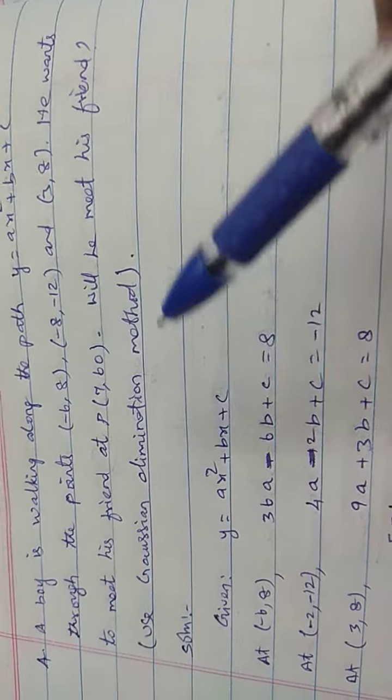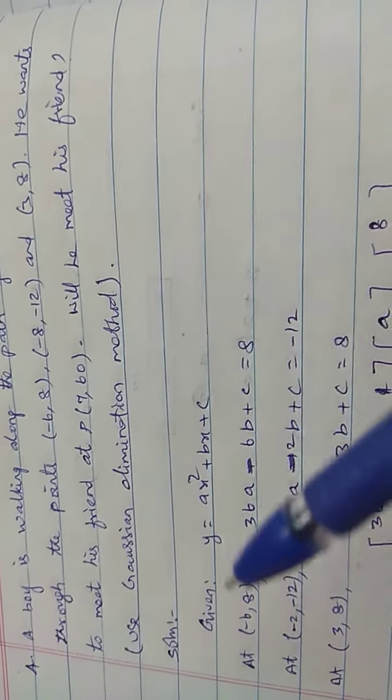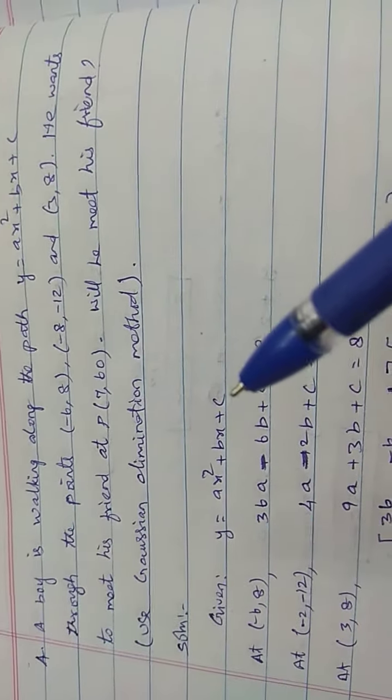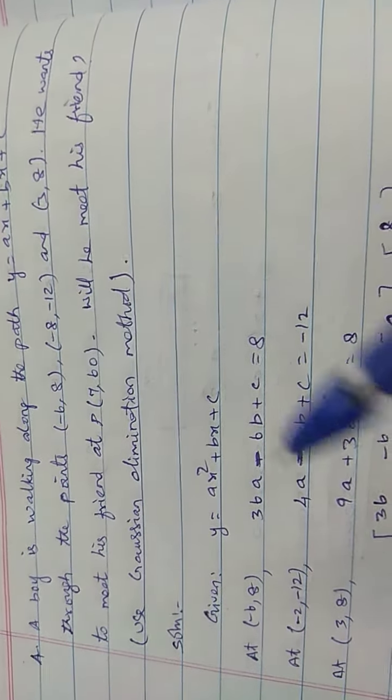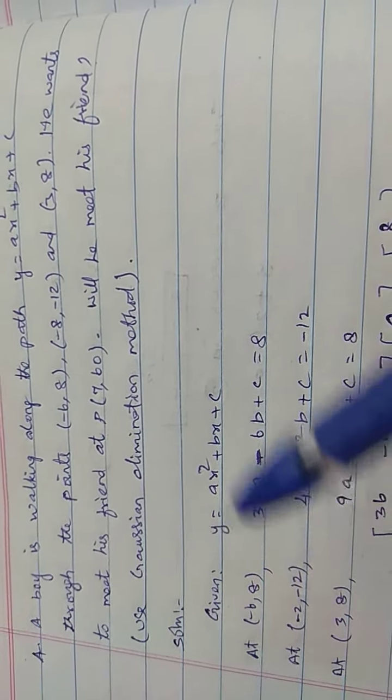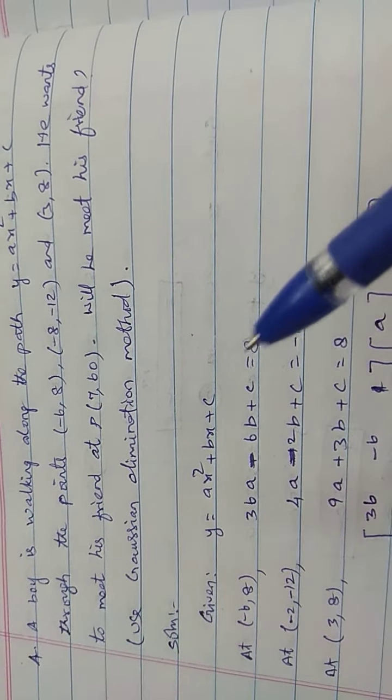Use Gaussian elimination method. Given y equals ax squared plus bx plus c, first the point passing through (-6, 8): x is -6 and y is equal to 8.